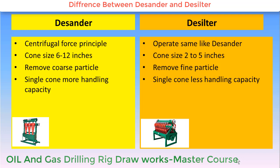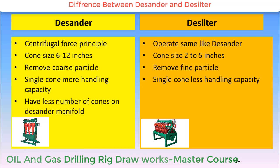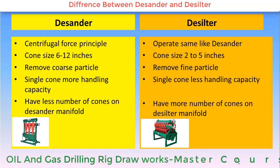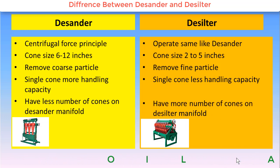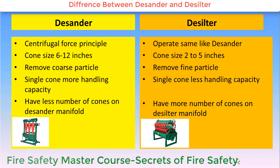Desander has fewer numbers of cones on the desander manifold, whereas desilter will have more number of cones on the desilter manifold. This is because desilter cones are smaller and their capability per cone to handle the fluid is less, whereas on the desander side the cone diameter is bigger and individual cone drilling fluid handling capability is more, so there will be fewer cones on the desander.